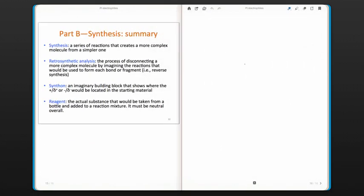So what you've seen in this part, synthesis is a series of reactions that creates a more complex molecule from simpler ones. Retrosynthetic analysis is the process of disconnecting a more complex molecule by imagining the reactions that would be used to form each bond or fragment in the target molecule. Remember that for retrosynthetic analysis, we draw a retrosynthetic arrow, so a double line before the arrow, indicating that the products are on the left and the starting materials, abbreviated SM, are on the right. A synthon is an imaginary building block that shows where the positive or delta positive or negative or delta negative would be located in the real starting material. The reagent is the actual substance that would be taken from the bottle and added to a reaction mixture. It must be neutral overall.